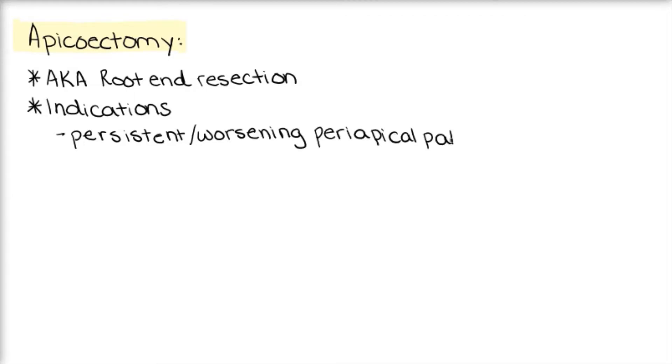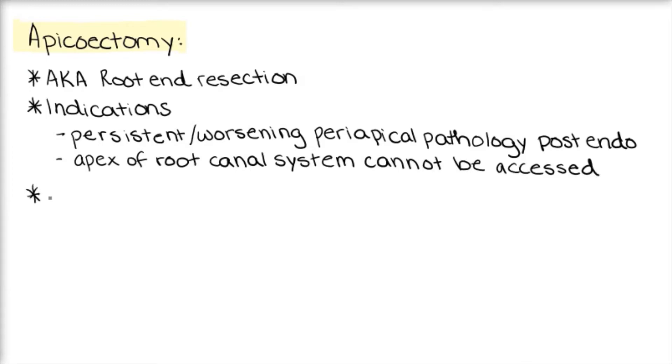Next on our list is the apicoectomy, also known as root end resection. It is indicated when we encounter persistent or worsening periapical pathology after endodontic treatment. It is also indicated when the apical part of a root canal system with periapical pathology cannot be accessed via a non-surgical route.